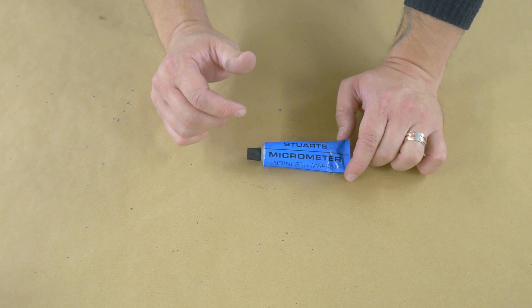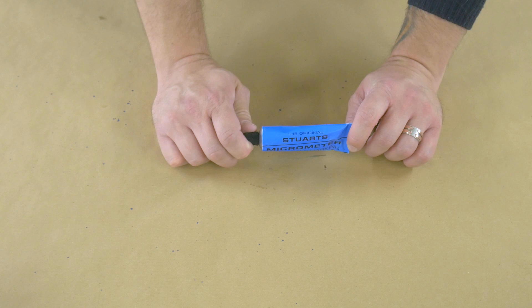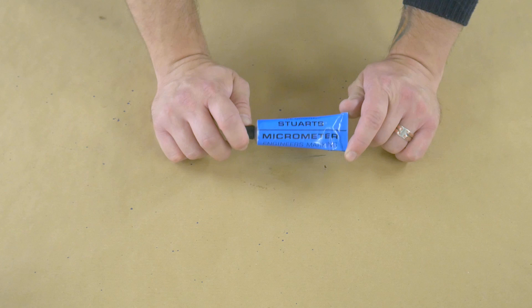There is a tin of Stuart's micrometer red on my shelf behind me. I'm not getting it down because it's leaked everywhere and I haven't got around to tidying it up yet. So buy the tubes, even if they're twice the price, they're twice as good.